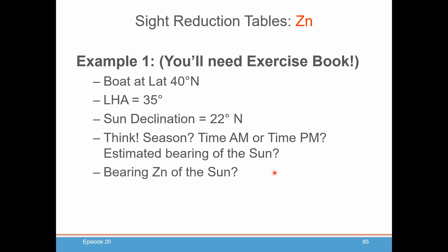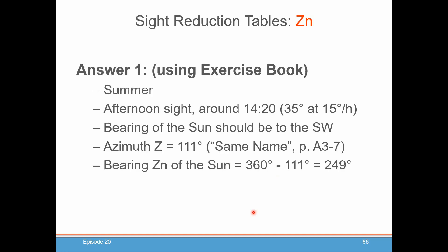Okay, let's see if you came close to the right answer. It's summer — why? Because the declination of the sun is almost close to its highest value, so it must be summer in the Northern Hemisphere, where our boat is. It's an afternoon sight — how do we know? The LHA is less than 180, so it's got to be afternoon. How far into the afternoon? We said it was 35 degrees LHA. The sun moves at about 15 degrees per hour, so it's about two hours and 20 minutes past noon, so it's around 14:22 local time.